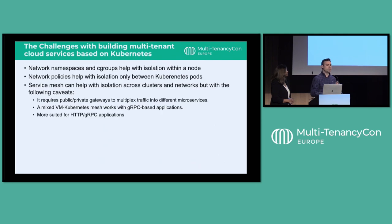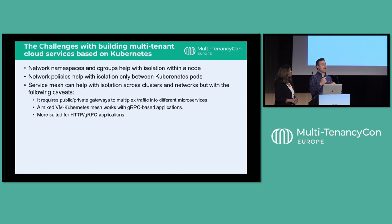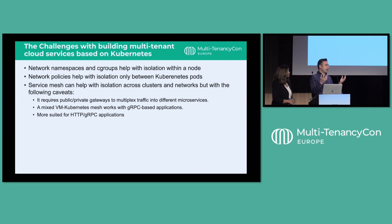At NetApp, we wanted to build a storage service based on Kubernetes, but these technologies all have gaps. Network namespaces and cgroups help with isolation within a single node. Network policies help between pods on the same cluster, but our server pods run on Kubernetes while storage clients can run outside on virtual machines. With service mesh, you can include both pods and VMs, but that use case is limited to gRPC applications — we needed to support NFS and SMB storage protocols. So the question was: can we do better?